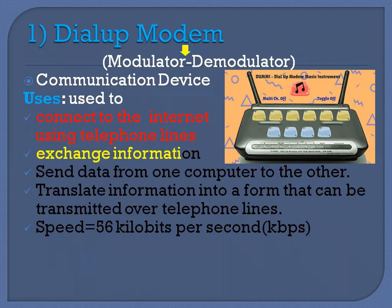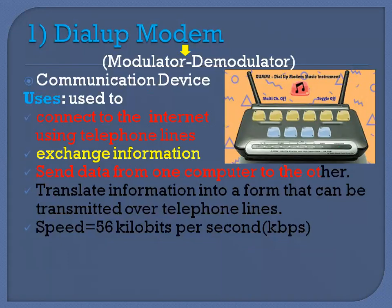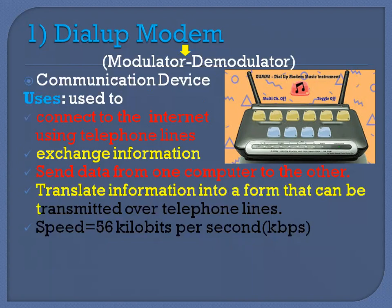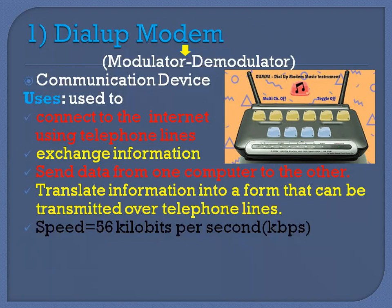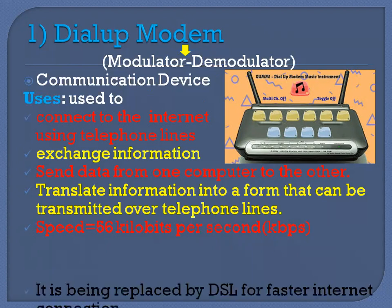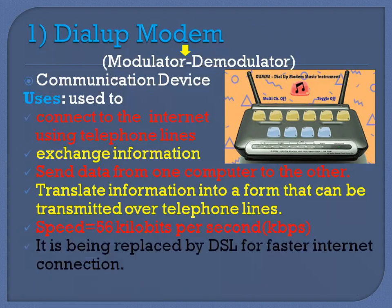It is used to exchange information between computers — to send data from one computer to the other. It is used to translate information into a form that can be transmitted over telephone lines. The speed of a dial-up modem is 56 kilobits per second, which is very slow, so dial-up modem was replaced by DSL for faster internet.